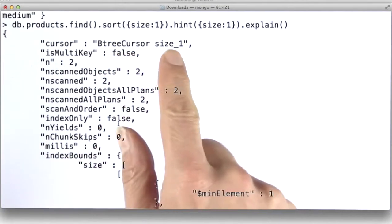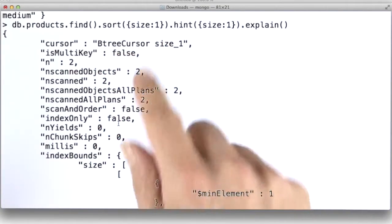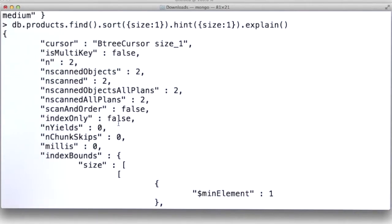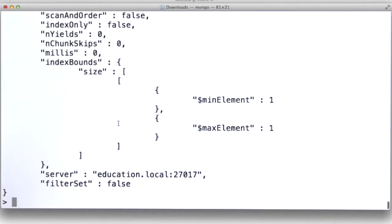So here it is, btree cursor size. We called explain to tell us the query plan, and it's using this index on size. And hence, it's omitting the two documents.